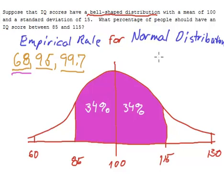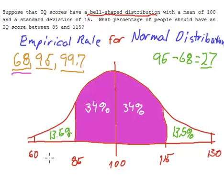So when we take the 95% that's between here and here and subtract the 68% that's between here and here, we will have 27% of the data to split up between this point and this point. That means there's 13.5% of the data between 115 and 130, and 13.5% between 60 and 85.